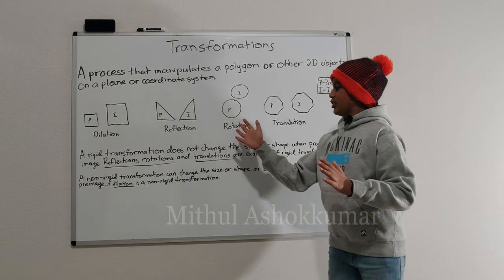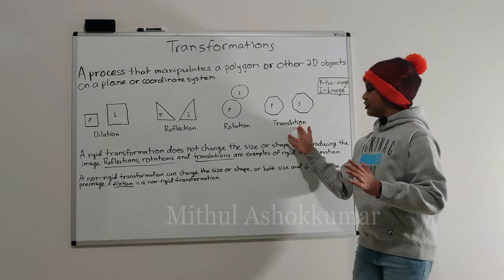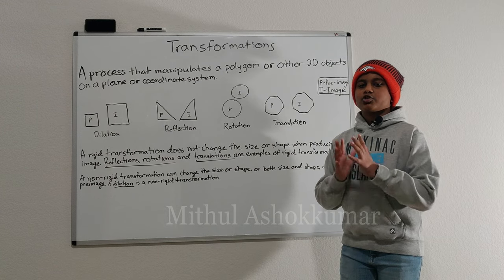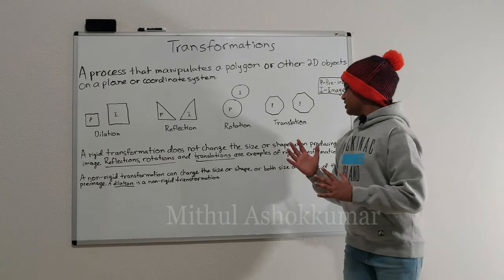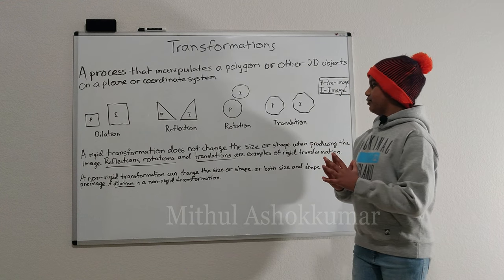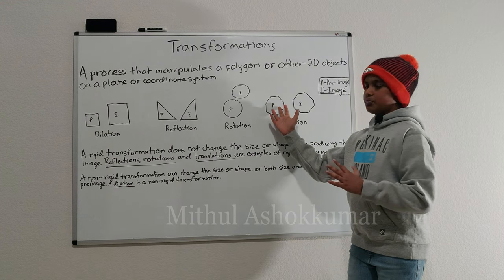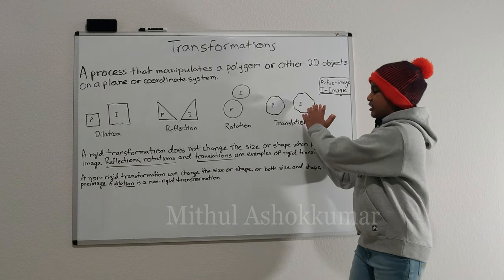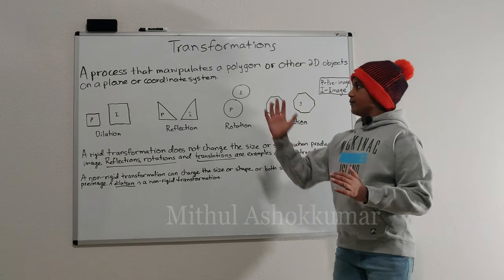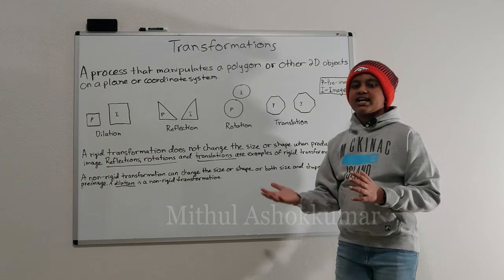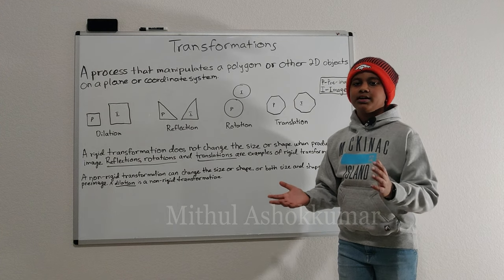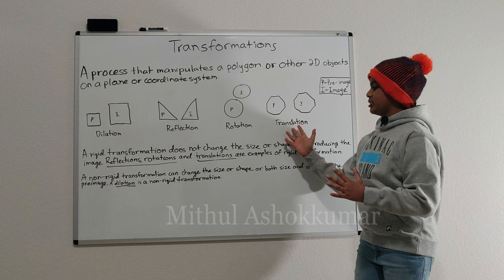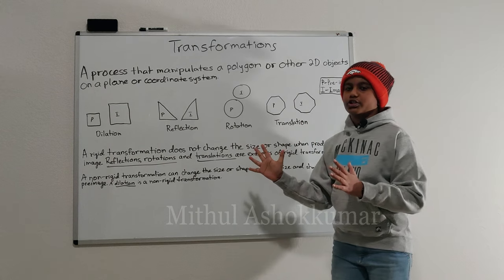Reflections, rotations, and translations are examples of rigid transformations. Let's take translations as an example. This is the pre-image. When we produce the new image as a part of transformations, the size and shape does not change, which is why translations is a rigid transformation.